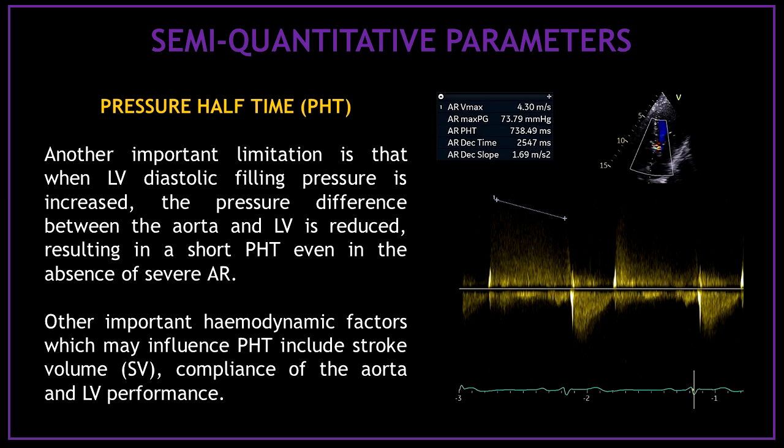An important limitation is that when left ventricular diastolic filling pressure is increased, the pressure difference between the aorta and left ventricle is reduced, resulting in a short pressure half time even in the absence of severe aortic regurgitation. Other important hemodynamic factors that may influence pressure half time include stroke volume, compliance of the aorta, and left ventricular performance.